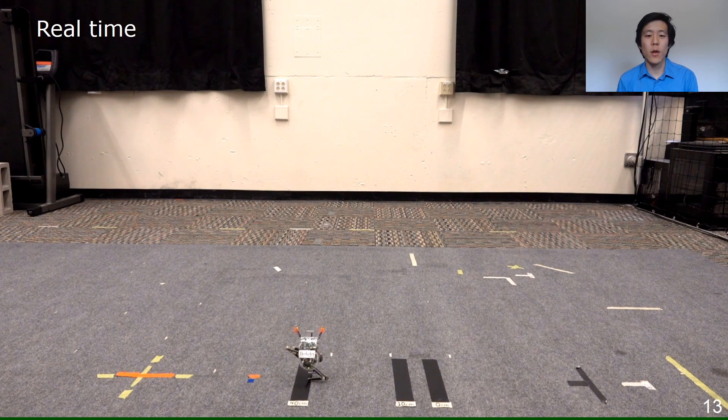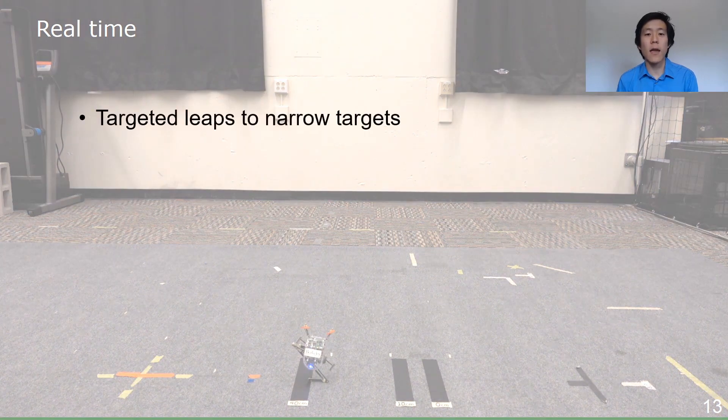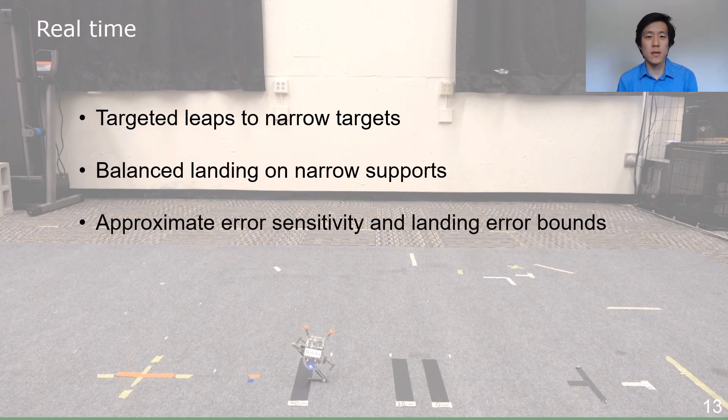In conclusion, we present stance phase control that enables the robot to make leaps to narrow targets and balance on a narrow support. Finally, we present approximate angular sensitivity and landing error bounds. Thank you!